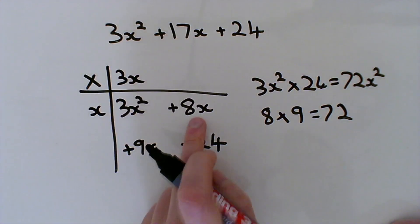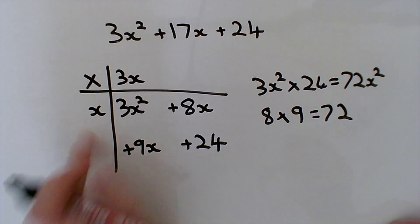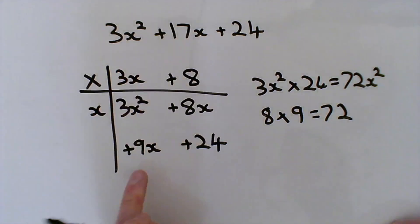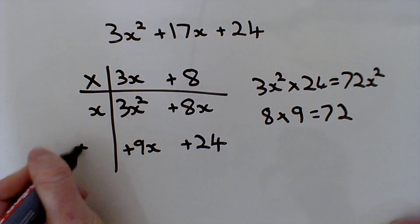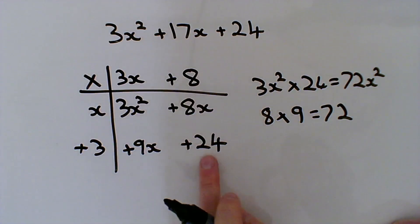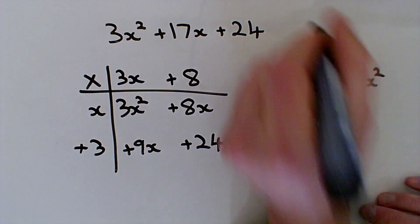Now, here I need to make 8x. I've got 8x already, so pop me positive 8 there. Down here I've got 3x, I need 9x, so I just need another plus 3. And then, luckily the last one works as well. 3 times 8 is 24. So we've got our factors.